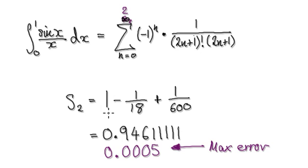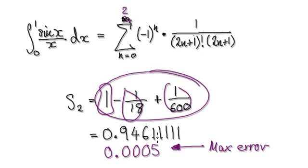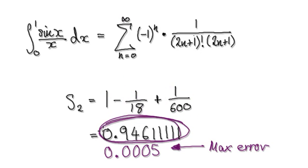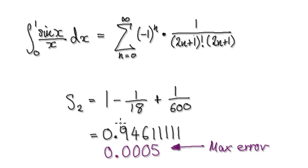All we need is 3 terms — 1, 2, 3 terms here — and we can be 100% sure that this number would be within our accuracy.